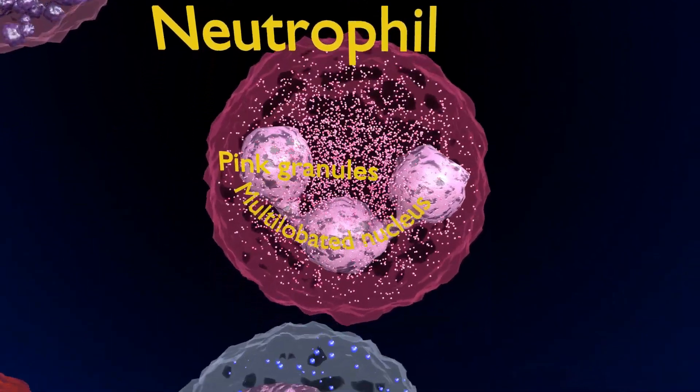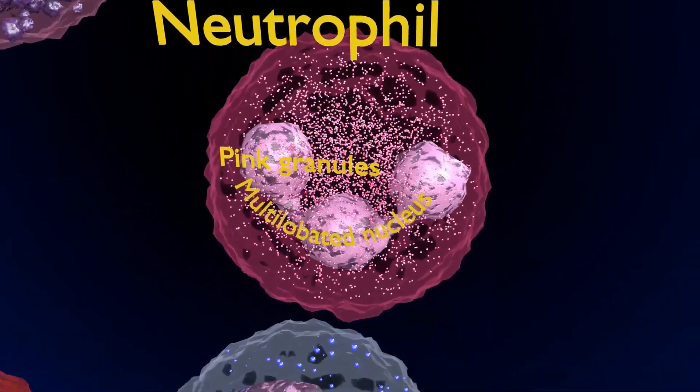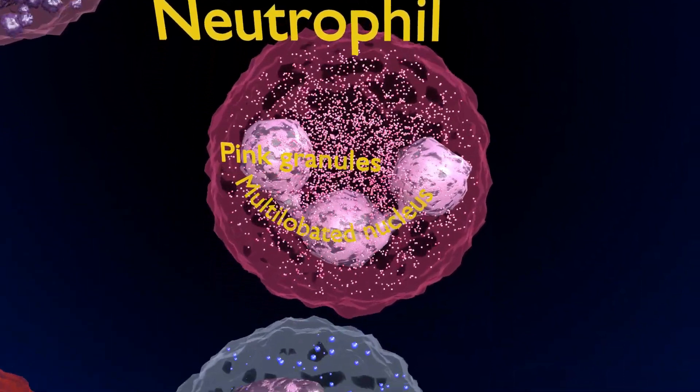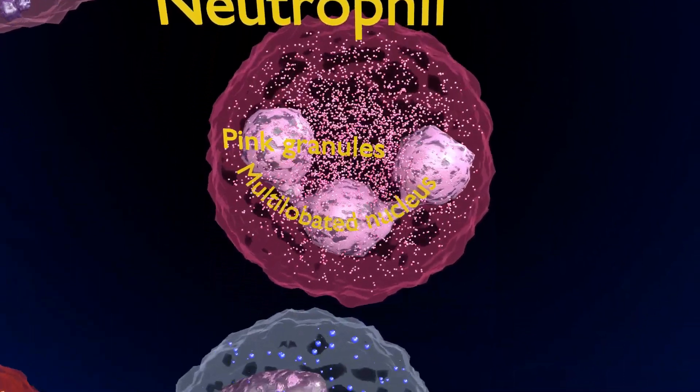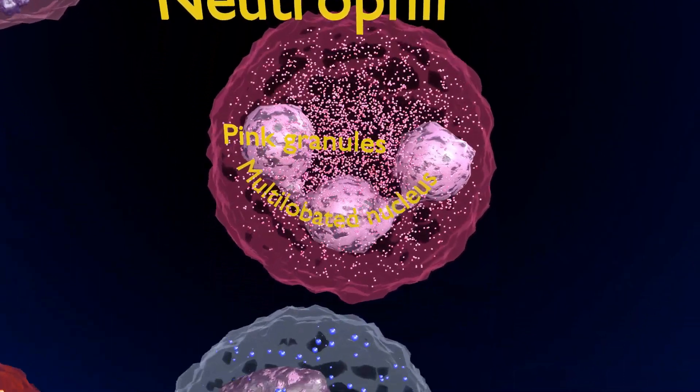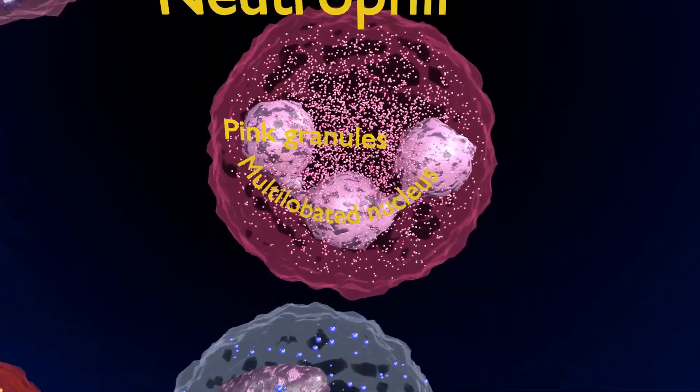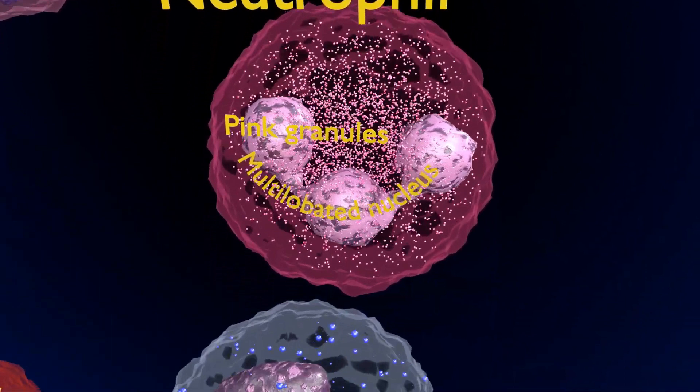In the cytoplasm of the neutrophil, you can clearly spot pinkish-purple granules. They are known as azurophilic granules.